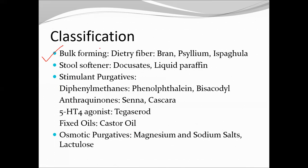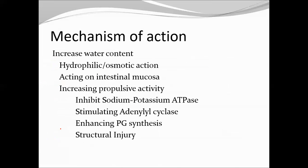One factor implicated in constipation is lack of dietary fibers, so bulk-forming drugs tend to add dietary fibers to intestinal content — we can use bran, psyllium, or ispaghula. We could use stool softeners such as docusates and liquid paraffin, stimulant purgatives such as diphenylmethane derivatives like phenolphthalein or bisacodyl, or anthraquinones such as senna and cascara. We could also use 5-HT4 agonists like tegaserod, fixed oils such as castor oil, or osmotic purgatives such as magnesium and sodium salts.